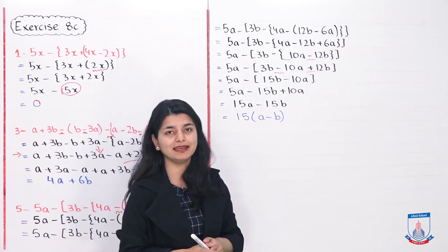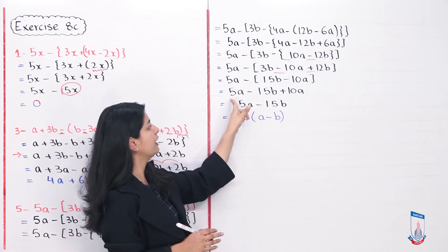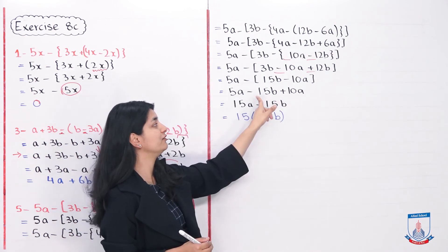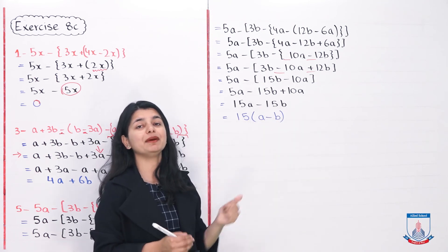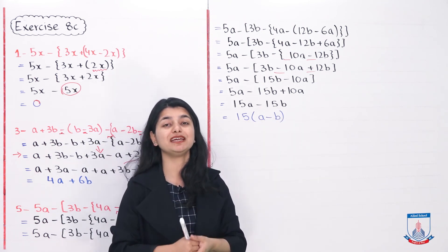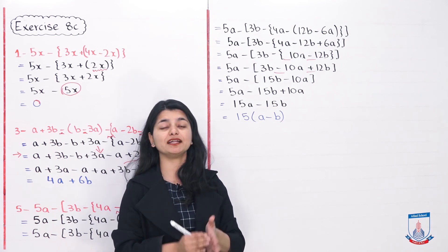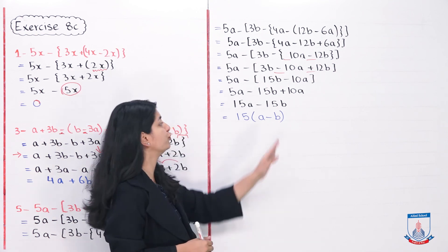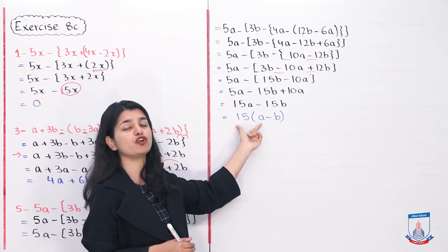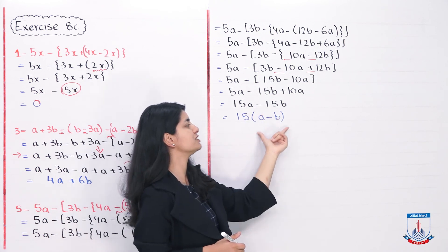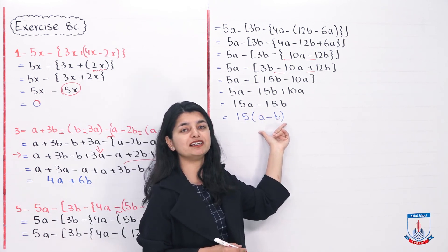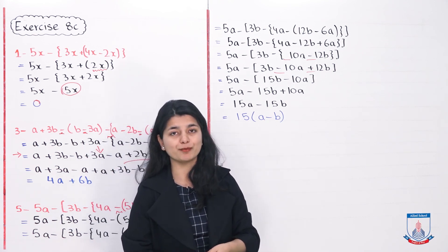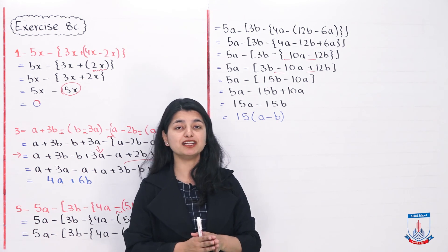In the last stage, I combine the 'a' terms: 10a plus 5a is 15a. And 15b comes down as it is. So the answer is 15a minus 15b. But as we saw in the second example, when the number outside is the same for both terms, you can write it in factored form. Since 15 is common to both, write 15 outside the bracket and a minus b inside, giving 15(a minus b). When you open this again you get the same answer — and this is your simplified form.